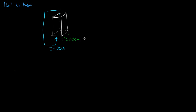Now that we have that, what we want to do is measure the voltage on this side of the box and this side of the box. We'll measure the voltage and we'll get some delta V. And this is called the Hall Voltage, usually written as VH.